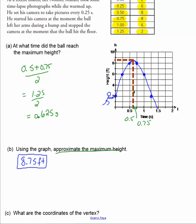And the last part to the question: what are the coordinates of the vertex? The vertex, as we mentioned in class, is either the highest point or lowest point in the graph where both sides of the graph come together. That's here. We have our time, so what happened at 0.625 seconds, and the maximum height, 8.75 feet.